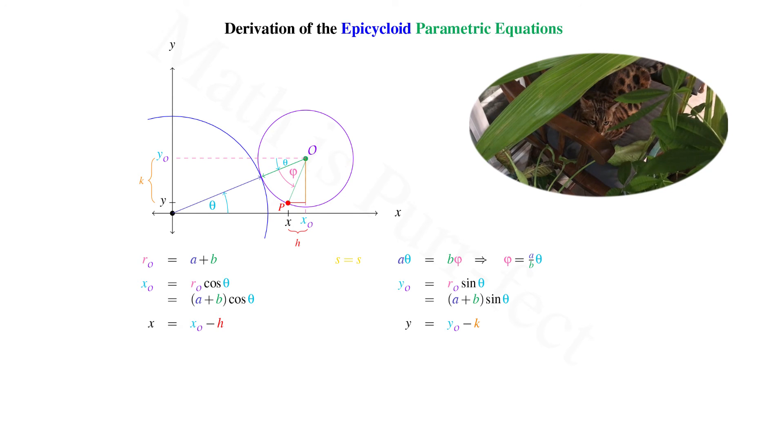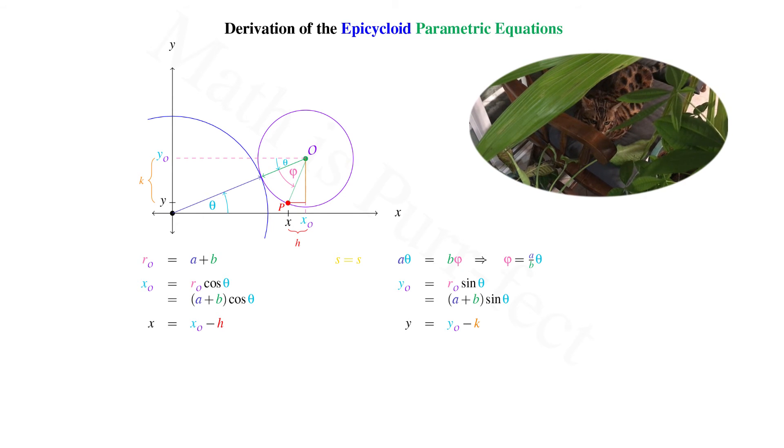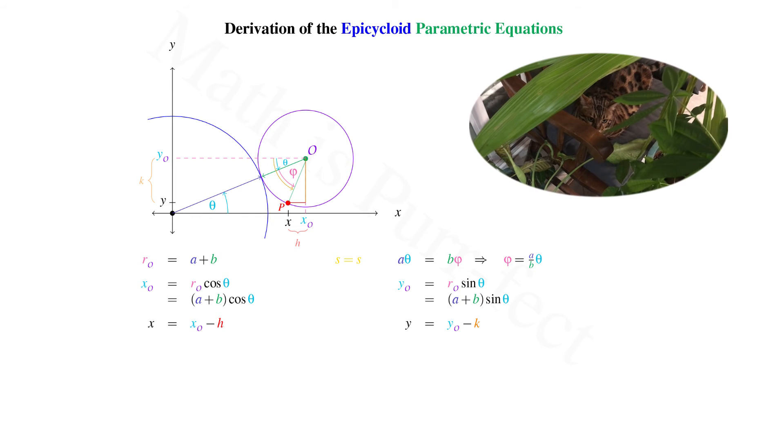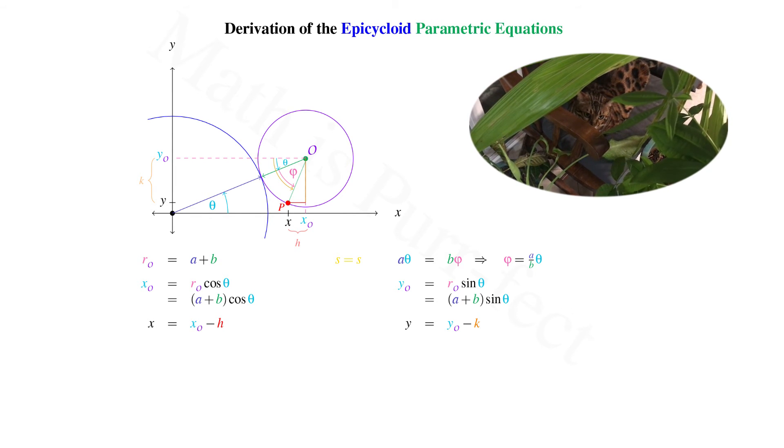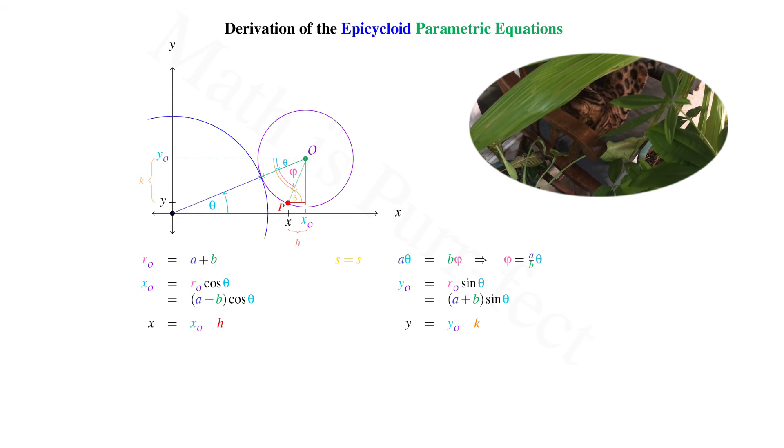As previously stated, we called the angle from R sub O to vector OP, phi. Hence the angle measure from the horizontal at Y sub O down to vector OP is the sum of theta and phi. Let's call the angle interior to our triangle at vertex P, beta.